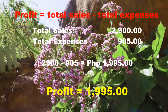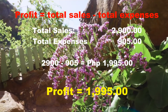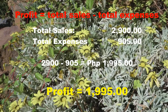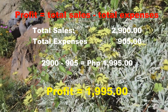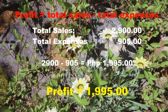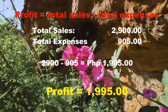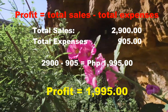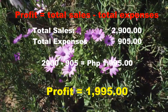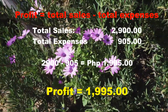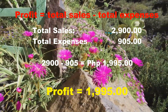Halimbawa, meron tayong total sales sa ating abokado ng 2,100 pesos, at meron tayong naging expenses na 905 pesos. Para makuha natin ang ating tinubo o ang ating profit, imaminus na sa 2,100 pesos ang 905 pesos. Kung kaya, mayroon tayong profit o tubong 1,195 pesos.